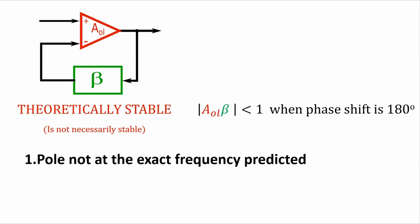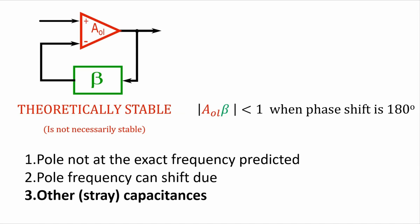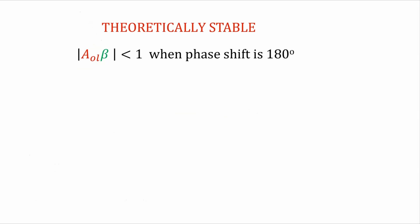One is that the pole may not be at the exact frequency predicted. The pole frequency can shift due to environmental conditions or time. And there's often other stray capacitances that are going to add additional poles to the system, which can cause the phase shift to reach 180 degrees quicker, which means that your open loop gain will actually be greater than 1 when the phase shift is, in practice, actually at 180 degrees.